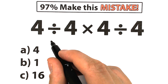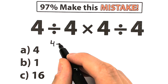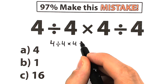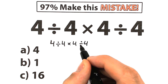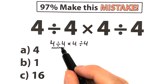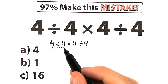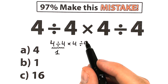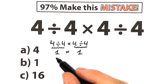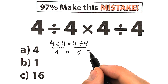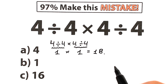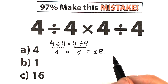Let me rewrite this challenge: 4 divided by 4 times 4 divided by 4. A lot of students solve it like this — they say we have 4 divided by 4 from left to right, which equals 1, and then 4 divided by 4 on the right, which also equals 1. With the multiplication in the middle, they get 1 times 1 equals 1. So many students choose option B and say it's the correct answer.